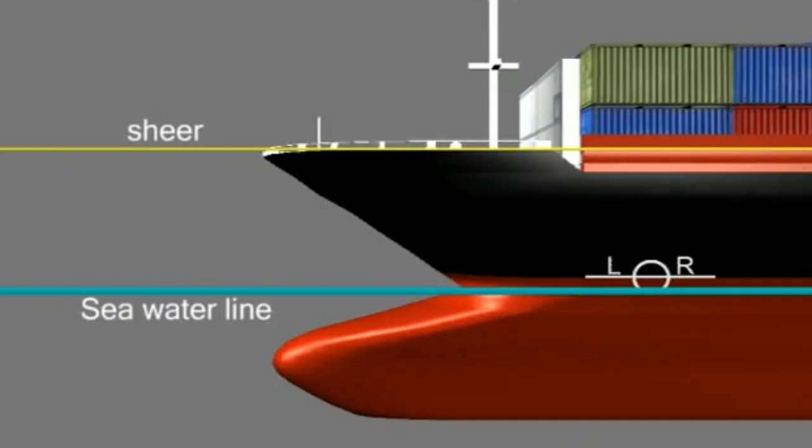Plimsoll line allows one to know the freeboard. A freeboard is the vertical distance between the water line and the shear of the ship where water can enter the vessel.